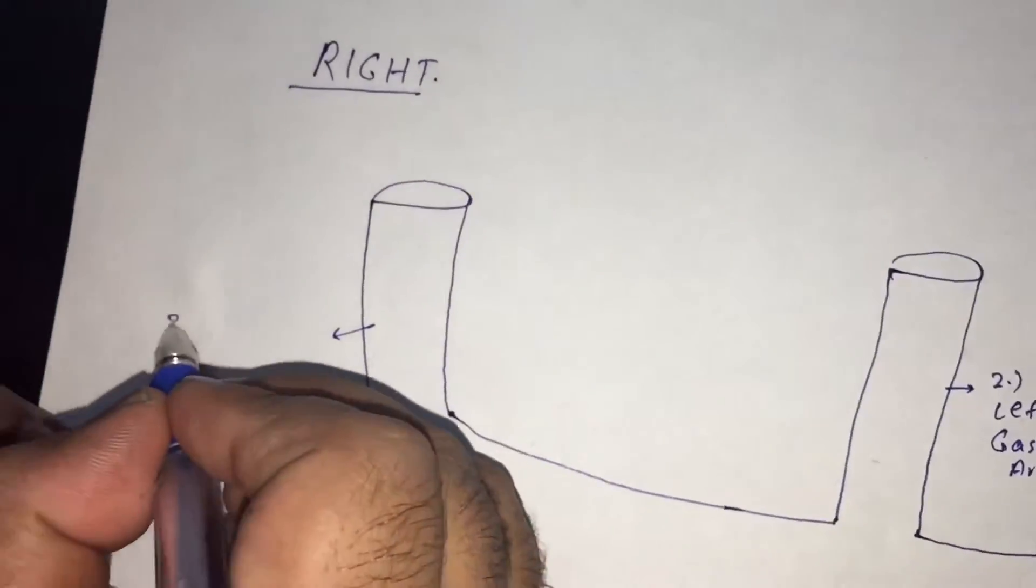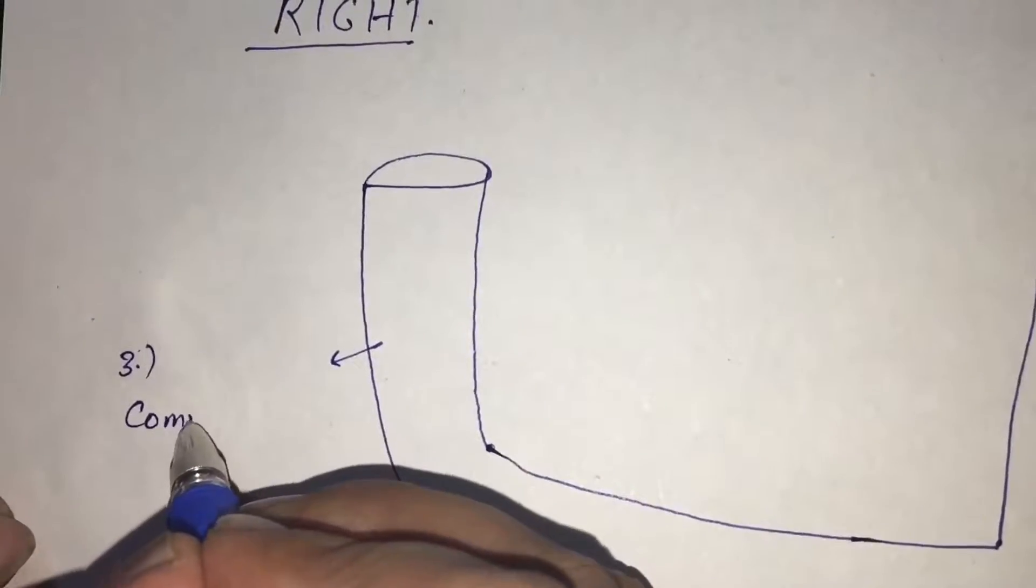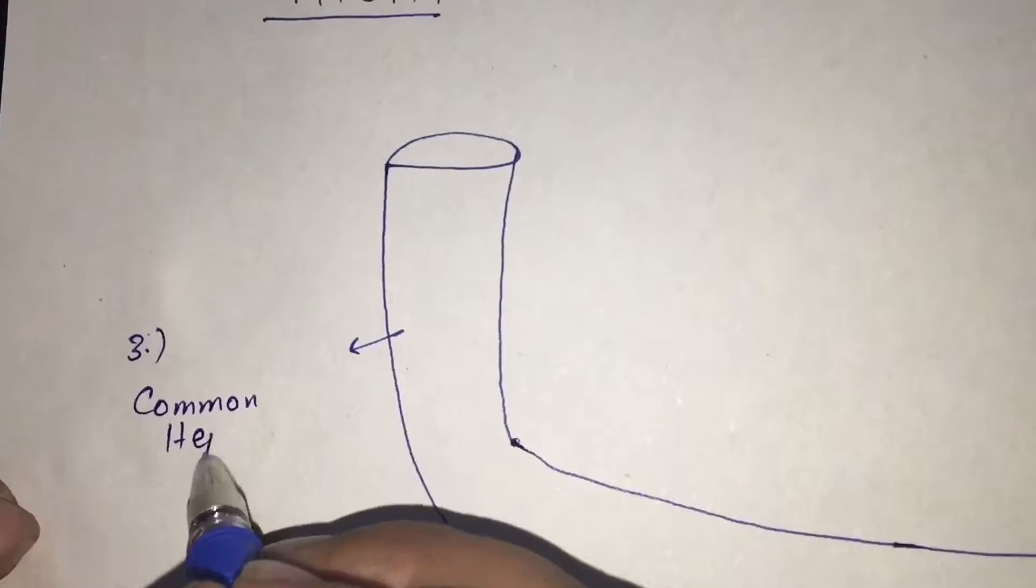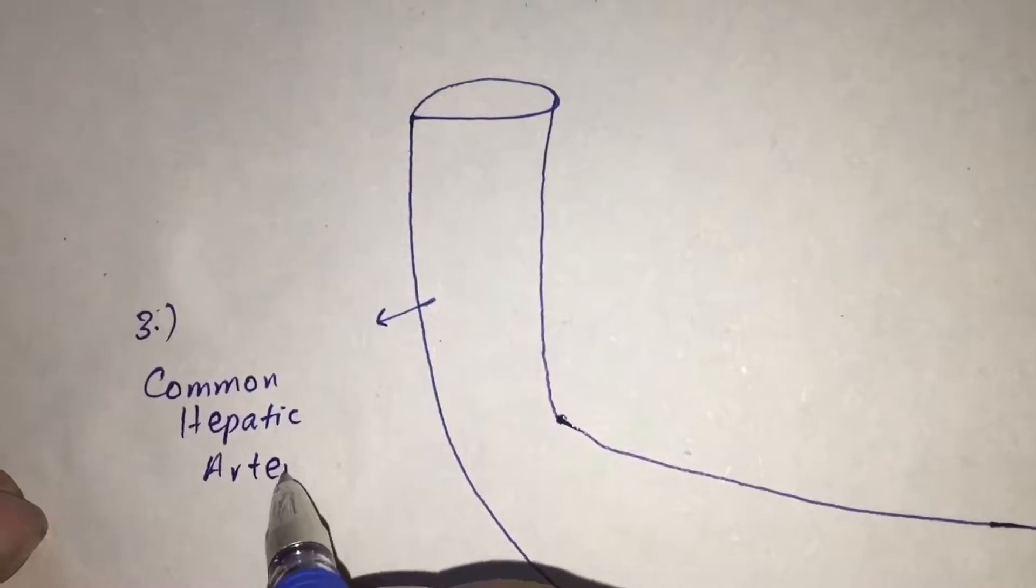And on the right you know there's a liver. So the third and the right branch is common hepatic artery. So these are three branches of celiac trunk.